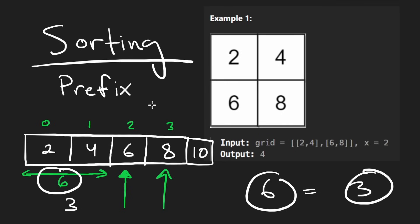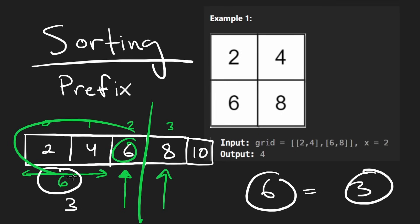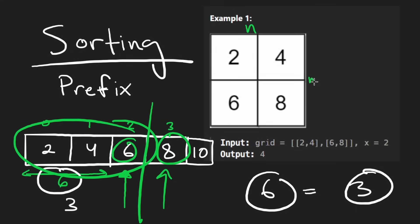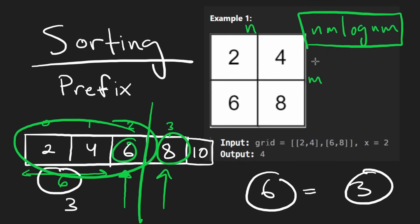This approach is almost linear time, but since we have to sort first, the time complexity for an n by m grid is O(nm log nm). Space complexity is constant.